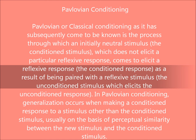In Pavlovian conditioning, generalisation occurs when making a conditioned response to a stimulus other than the conditioned stimulus, usually on the basis of perceptual similarity between the new stimulus and the conditioned stimulus.